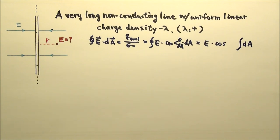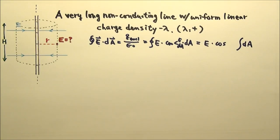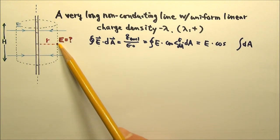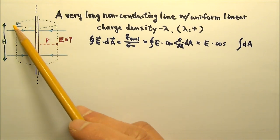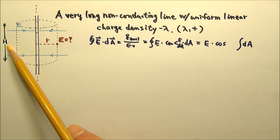What Gaussian surface should we make? We need a cylindrical Gaussian surface with radius r so it goes through the point we're interested in. There's no requirement for the height, so we can just make it an arbitrary height h.